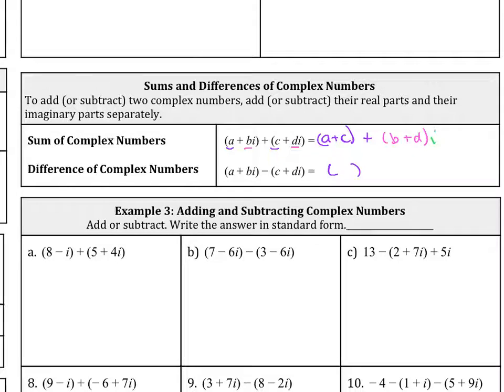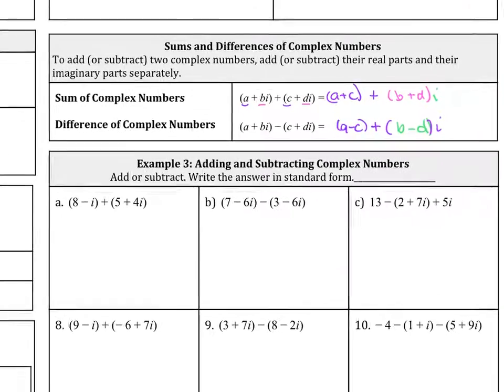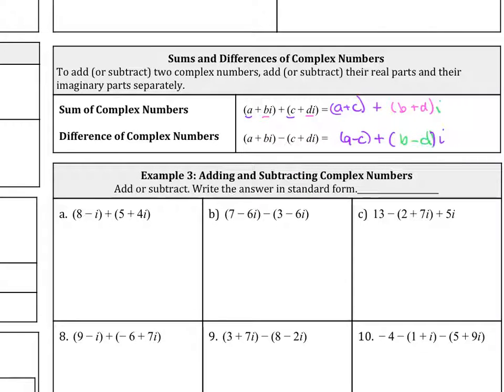And then the i just goes on the outside. It's the same thing for the subtraction. You do A minus C and then plus B minus D and then the i. Now I'm going to write that, but really when we do this you'll see that you don't have to think about it in that way.